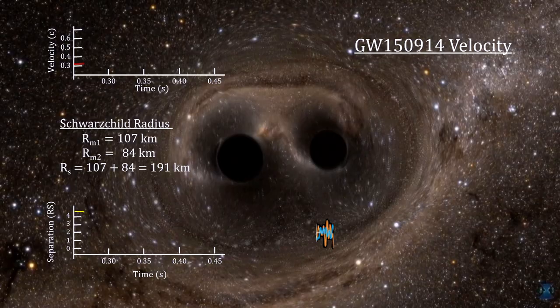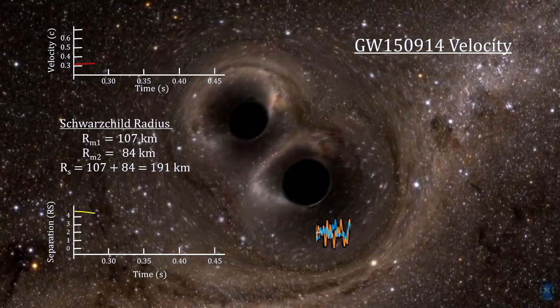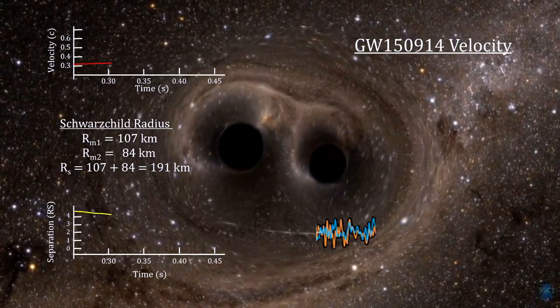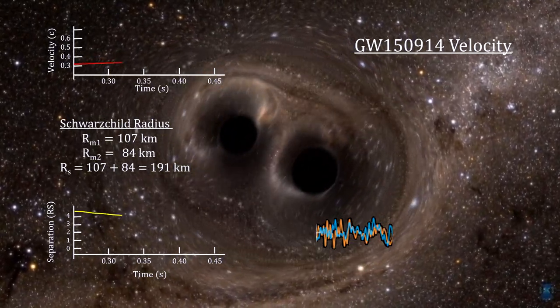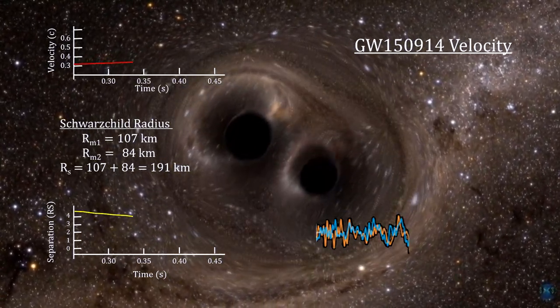During the last 200 milliseconds of their inspiral, the orbiting velocity of the black holes increased from 30% of the speed of light to 60% of the speed of light.